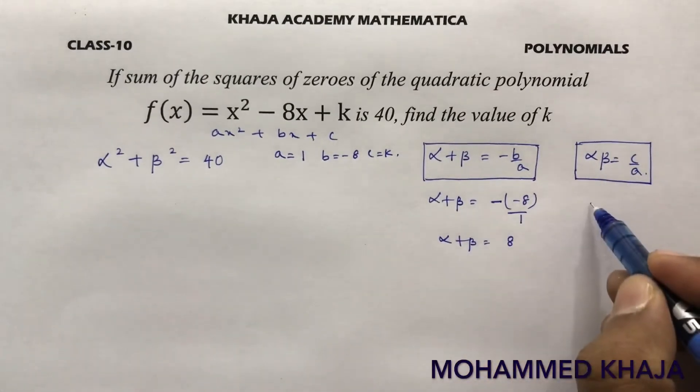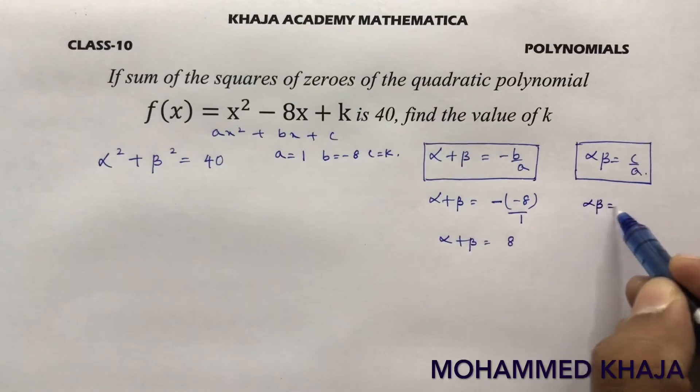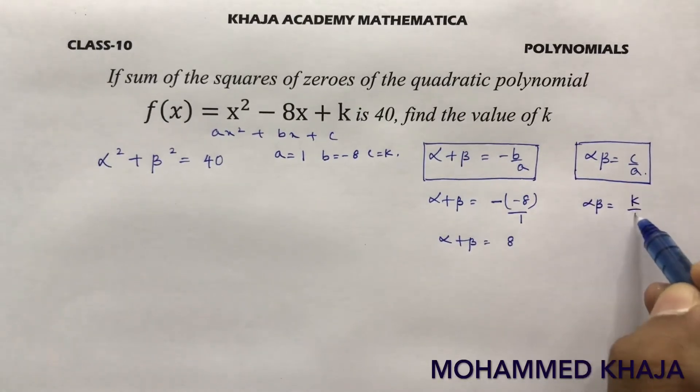Alpha * beta is c/a. c is k, k by 1. So alpha * beta is k.